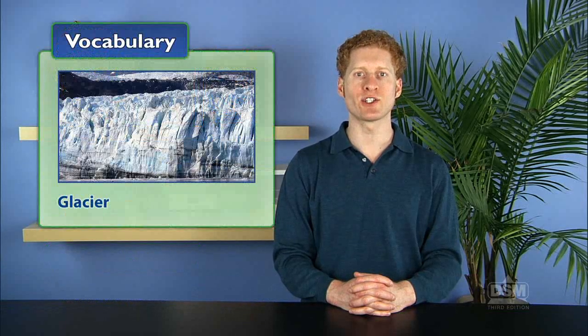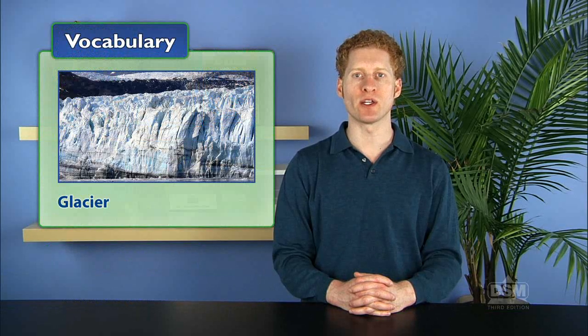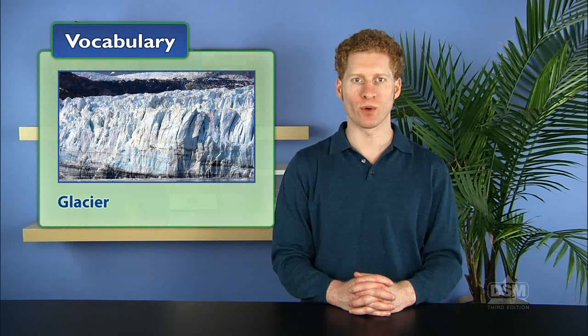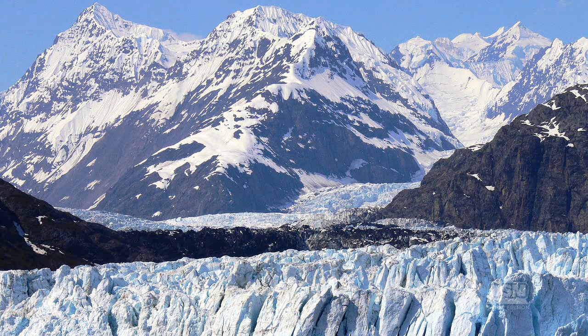Responses may include that a glacier is a solid river of ice. Explain to the students that a glacier is a mass of ice formed by the accumulation of many seasons of snow. The tremendous pressure caused by the weight of this snow transforms the snow on the bottom to ice.